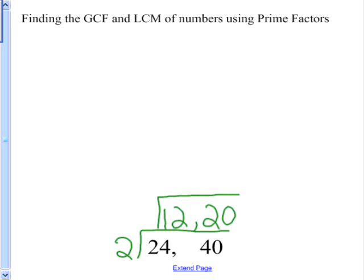Next, you want to see if there's any prime that will go into 12 and 20, and 2 will go into both. 2 goes into 12 6 times, and 2 goes into 20 10 times.